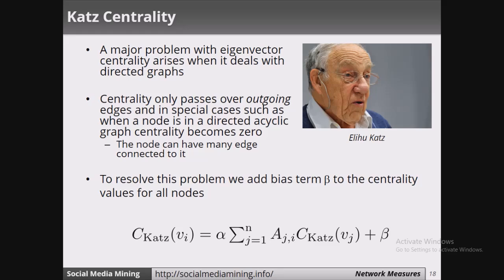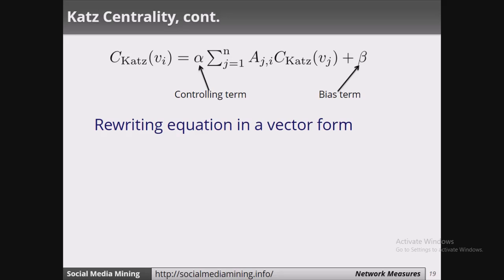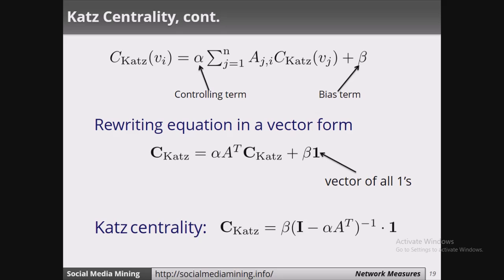How does Katz centrality handle this problem? By adding an extra term called beta, which we call the bias term. In the same eigenvector formula we add this extra bias term. The formula is the same as eigenvector centrality with the addition of bias beta. We also have alpha, which is called the controlling term. We rewrite this equation in vector form as beta times 1, where 1 is a vector of all ones. The Katz centrality formula is: C_Katz(vi) equals alpha times the summation over j of a_ji times C_Katz(vj) plus beta.